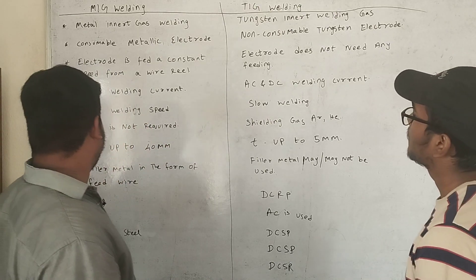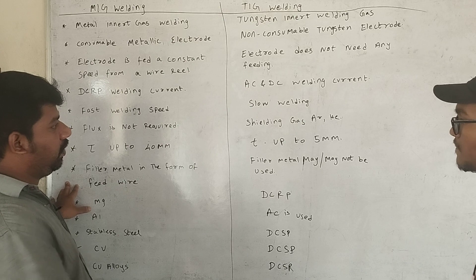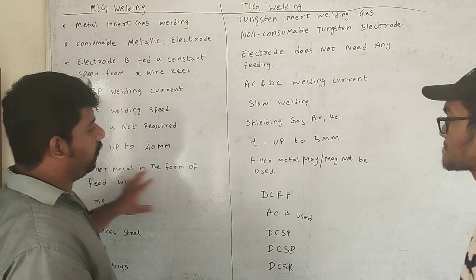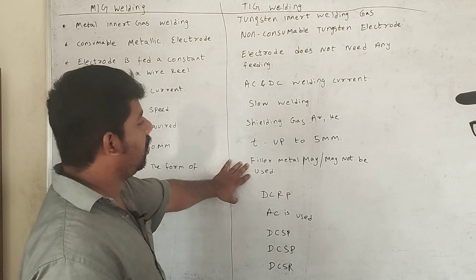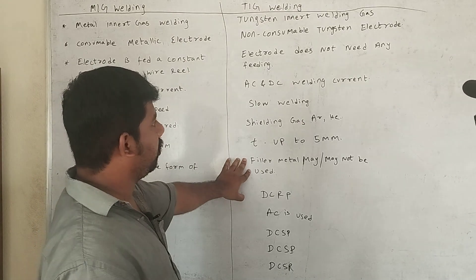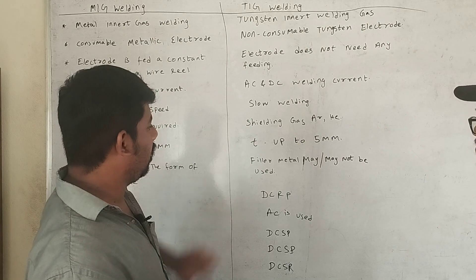In MIG welding, filler material is fed as a wire. In TIG welding, a separate filler material rod is used.